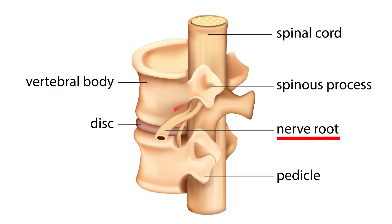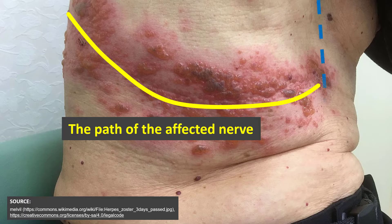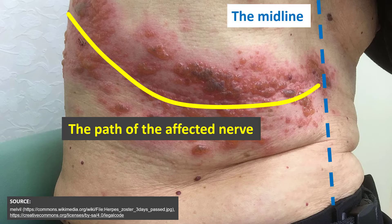Since the virus reactivates in the sensory ganglion and travels along the affected nerve, the rash can appear anywhere from the spine all the way down to the median line. If it crosses the median line, it's unlikely that this is herpes zoster, because if the nerve cannot cross it, the rash cannot cross it either. So this rash will typically affect one dermatome, maybe two neighboring dermatomes.